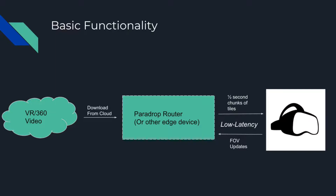If the user is looking at one tile, the PearDrop router will send half second chunks of the tile that the user is looking at. It can do that in a really low latency way because it doesn't have to go over the internet — it's just located at the router. And so that ends up saving a lot of bandwidth.